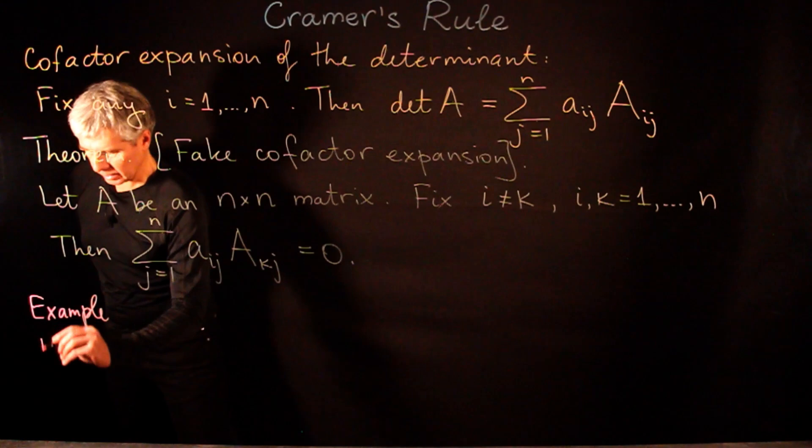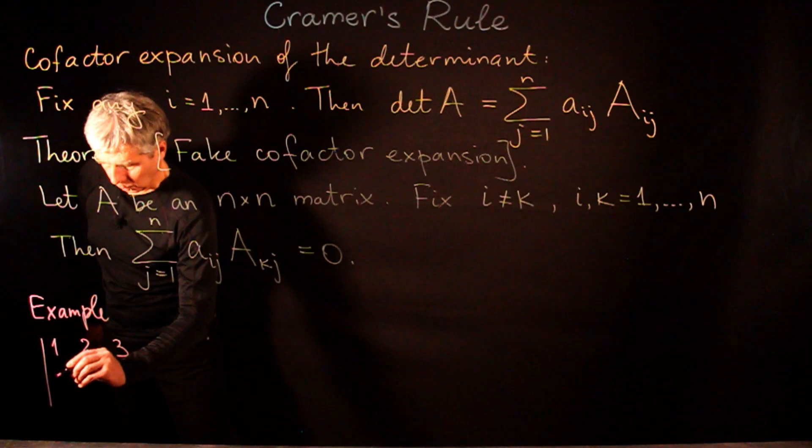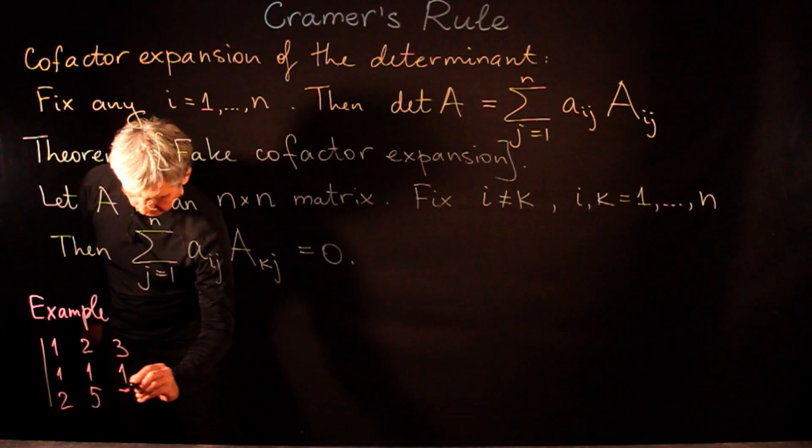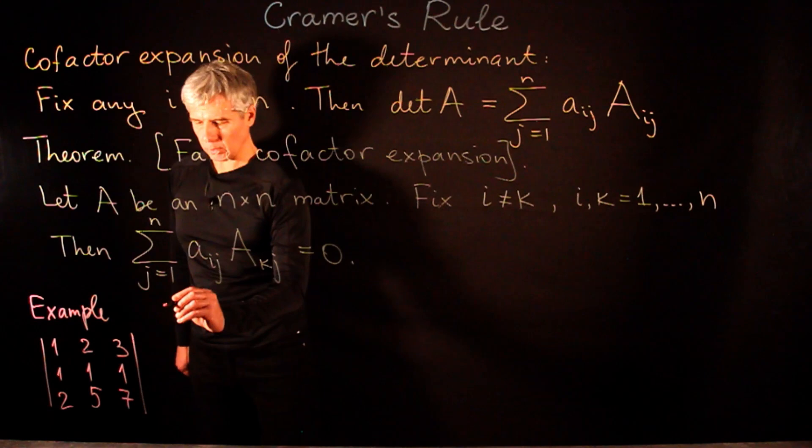Let us look at the determinant of the matrix with rows [1, 2, 3], [1, 1, 1], [2, 5, 7], and let us take the cofactor expansion.